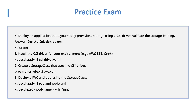Question 6: Deploy an application that dynamically provisions storage using a CSI Driver and validate the storage binding. Solution: Install the CSI Driver for your environment (e.g., AWS EBS, Ceph). Apply with 'kubectl apply -f csi-driver.yaml'. Create a StorageClass that uses the CSI Driver provisioner 'ebs.csi.aws.com'. Deploy a PVC and Pod using the StorageClass with 'kubectl apply -f pvc-and-pod.yaml', then verify with 'kubectl exec -- ls /mnt'.